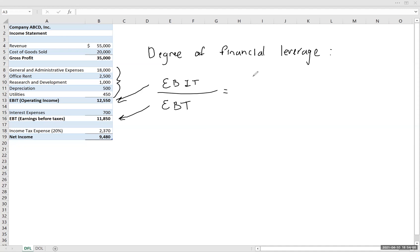So we have EBIT in this example of 12,550, and we put that over the EBT of 11,850, and we get about 1.06.